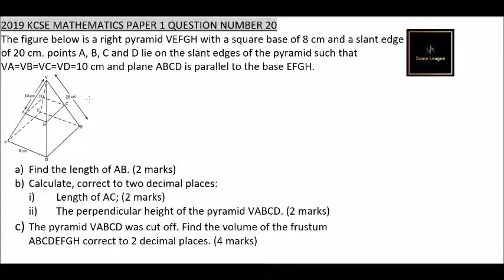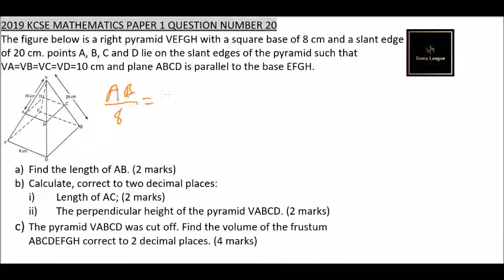So we have our pyramid here. For part a, we need to find the length of AB, which is one of the sides of the middle base. If we take the whole pyramid and the smaller pyramid on top, they are similar. Therefore we can say the ratio of AB divided by 8 (that is EF) equals the ratio of the slanting sides, which is 10 divided by 20.